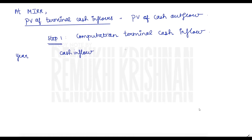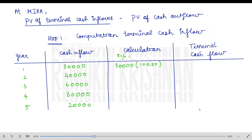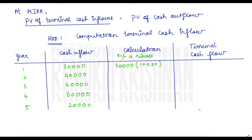We compute the terminal value using a tabular column with columns for year, cash inflow, calculation, and terminal cash flow. The tenure is years one through five. We compound each cash flow: for example, ₹30,000 multiplied by (1 + 0.08)^(5-1). The 8% comes from the reinvestment rate, which is mentioned in the question. If not mentioned, you can assume a rate and proceed.